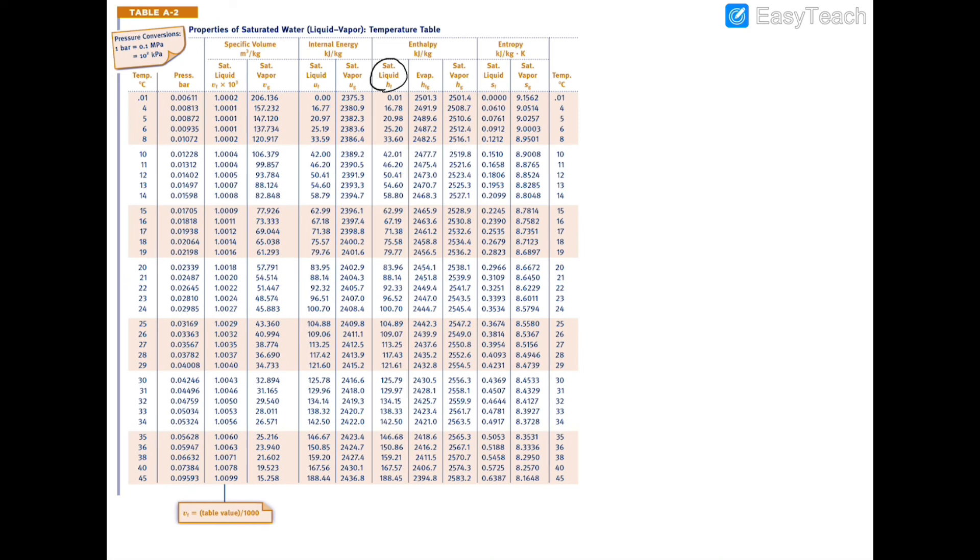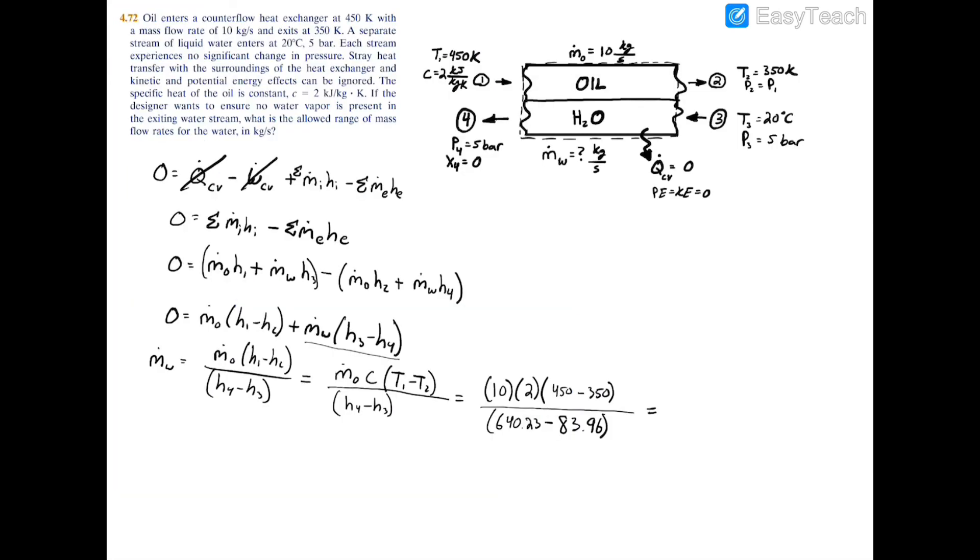So we can approximate using the saturated liquid specific enthalpy of 20 degrees Celsius for water, and we'll have 83.96 kilojoules per kilogram. If you plug this into your calculator you'll find that your mass flow rate of your water is equal to 3.595 kilograms per second.